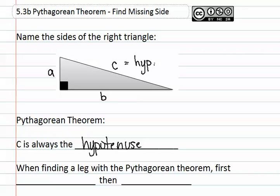It must always be the hypotenuse, otherwise the Pythagorean Theorem or the formula we use, which is A squared plus B squared equals C squared, will not work if you do not have the hypotenuse as C.